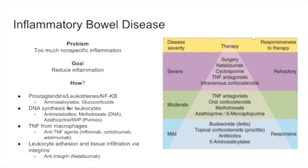The second thing we can do is inhibit the leukocytes — the white blood cells actually responsible for inflammation. We can use anti-metabolites, things that inhibit DNA synthesis, like methotrexate and azathioprine or 6-mercaptopurine. These essentially kill the white blood cells.